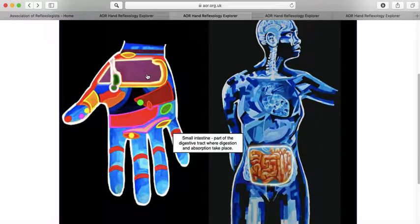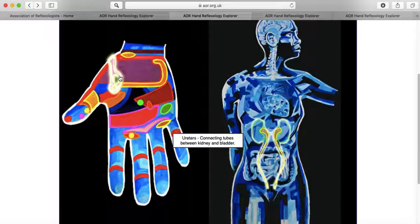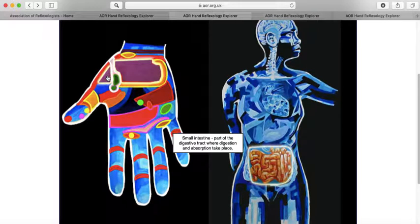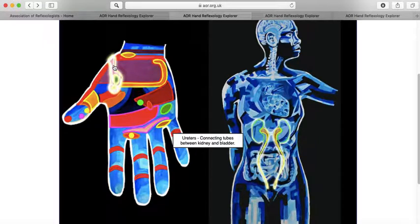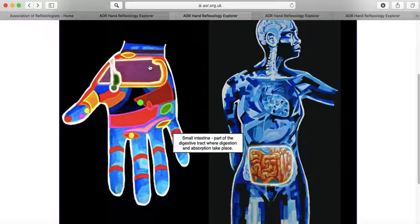And then you can do a little bit of the intestines as well. So you can just go from the fifth finger towards the thumb area. And you can just again stroke or just do gentle finger walking. That's the right hand.